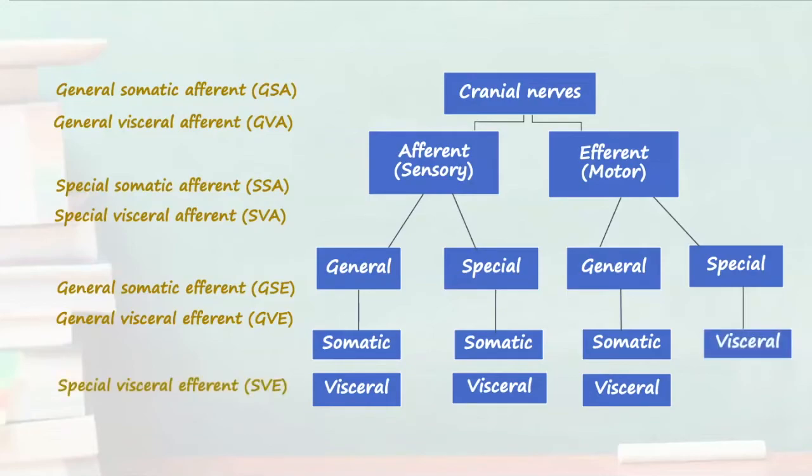Special visceral efferent nerve fibers can also be described as branchial efferents based on their embryological origin. These supply muscles derived from the pharyngeal arches such as muscles of the face, palate, pharynx and larynx. Lastly, it's worth remembering there is no classification for special somatic efferents.